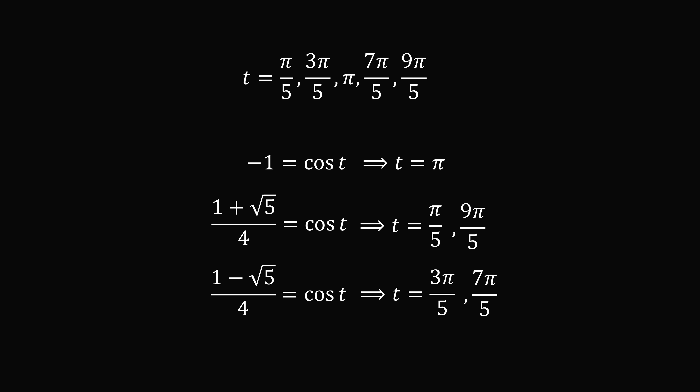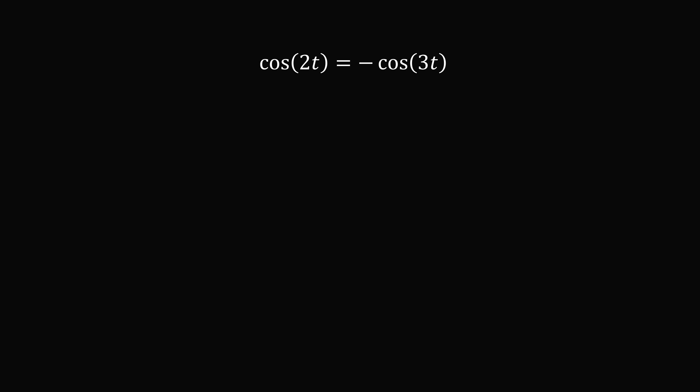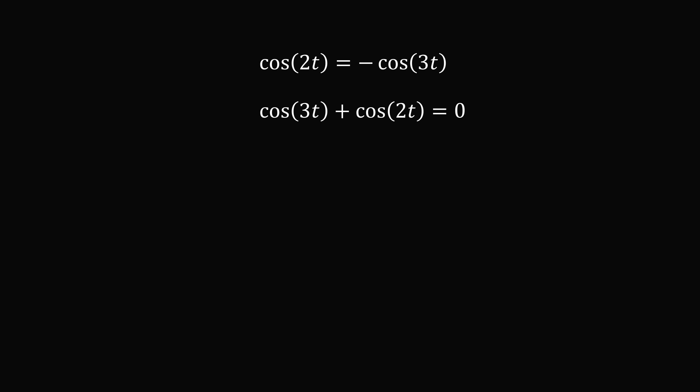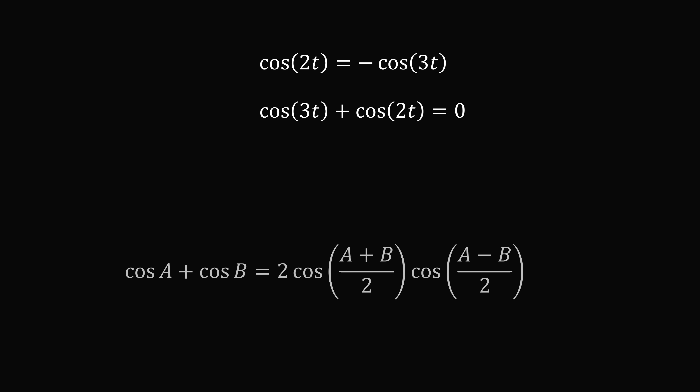Although it took many steps, we found the answer. However, this was a very long method, so let me present a couple of quicker ways. Another way is to use the sum-to-product formula. We have cosine of 2t equals negative cosine of 3t. Bringing everything to the left side gives cosine of 3t plus cosine of 2t equals 0.